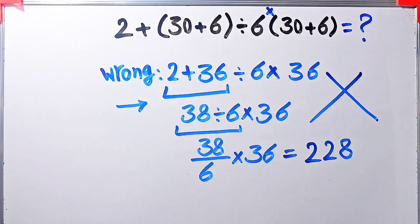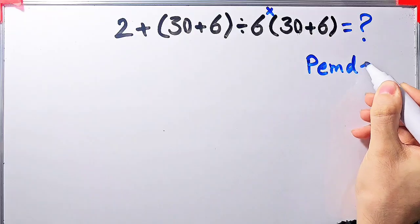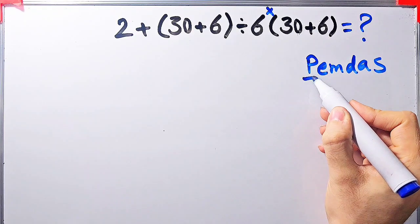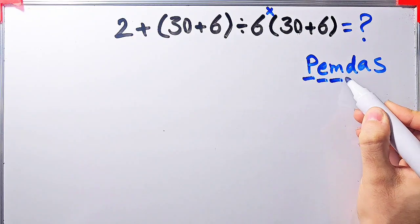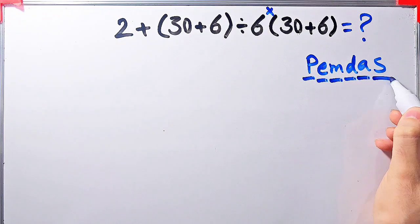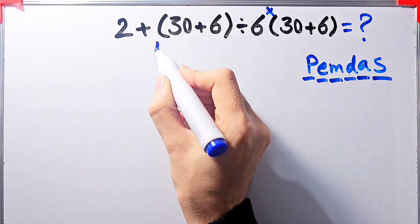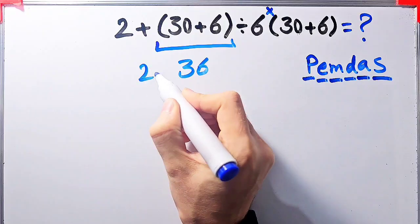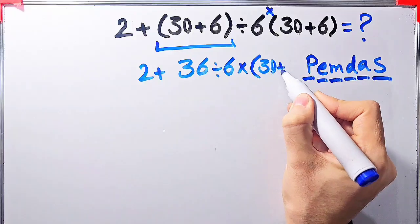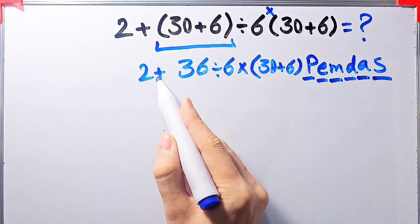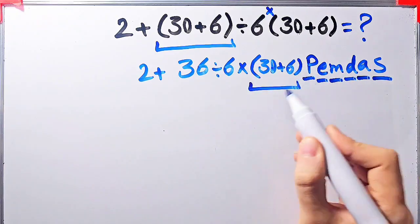Let's solve this step by step. We need to follow the PEMDAS rule: P for parentheses, E for exponent, M for multiplication, D for division, A for addition, S for subtraction. According to PEMDAS, first we simplify the parentheses. Inside the first parentheses: 30 plus 6 equals 36. Now we have 2 plus 36 divided by 6 times open parentheses 30 plus 6 close parentheses. We simplify the second parentheses: 30 plus 6 equals 36.